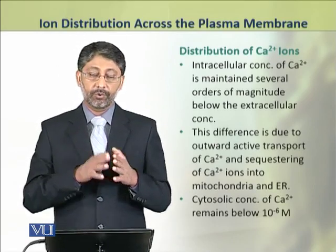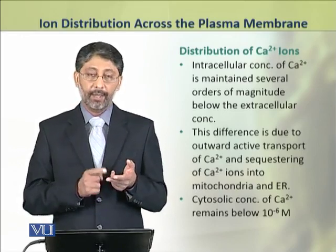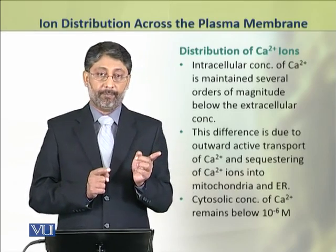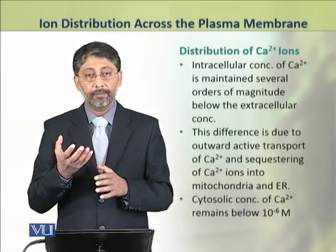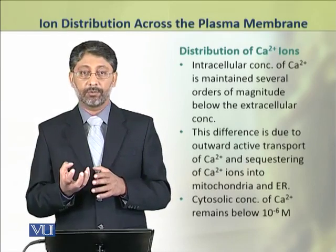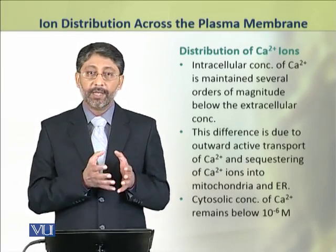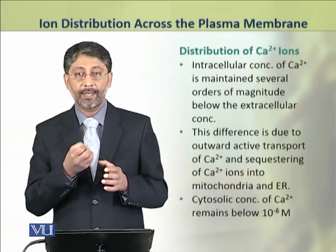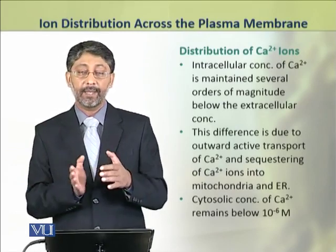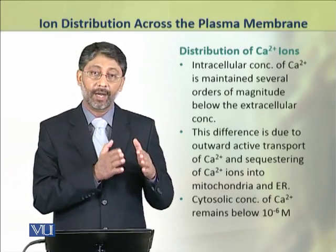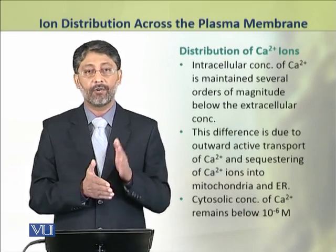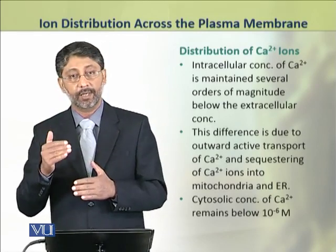Ye difference do major factors ki wajah se. Eek ye ke calcium ions ko actively transport out kiya jata hai. Aur doosara factor ye ke mitochondria aur endoplasmic reticulum — yeh douno organelles cytoplasm me mojood calcium ions ko sequester kerte hai, catch lete hai. Is wajah se calcium ion ki concentration in douno organelles me to high hoti hai, lekin cytoplasm me ye intahai kam ho jati hai. Cytoplasm me calcium ions ki jo concentration maintain ki jati hai, woh approximately 10 raise to power minus 6 mol se kam rakhi jati hai.